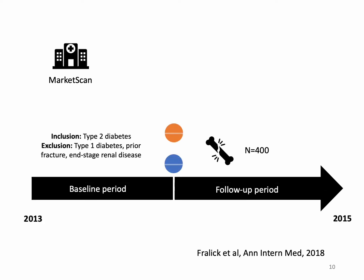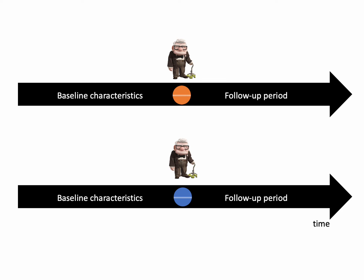Going back to the study on whether SGLT2 inhibitors are associated with an increased risk of fracture, we used a U.S. database called MarketScan, which included individuals with health insurance. The cohort was defined as individuals with type 2 diabetes; the exposed group received an SGLT2 inhibitor and the comparator — the unexposed — received a DPP4 inhibitor. They were then followed forward in time to see who had a fracture. Because all data had already been accrued by the time I conducted the study in 2016, this is retrospective.